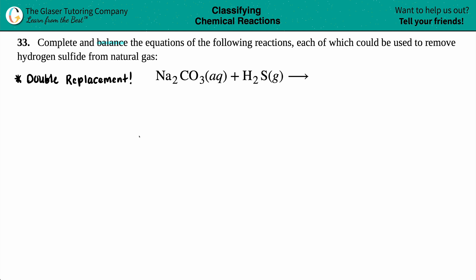Whenever you're doing a double replacement or double displacement reaction, the easiest way to go about this is to first find out the ions that exist in the first part of your equation. So I'm going to write these out big. We have Na₂CO₃ aqueous plus H₂S, and that's a gas.